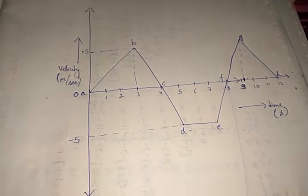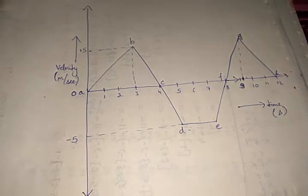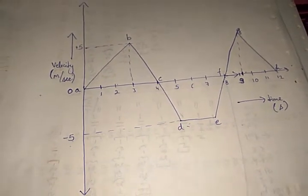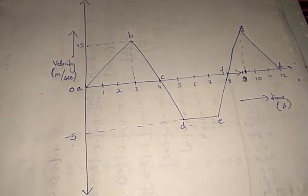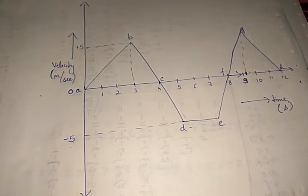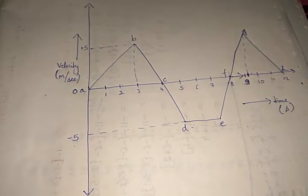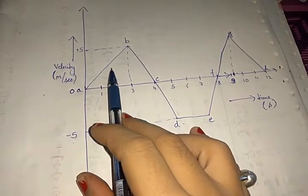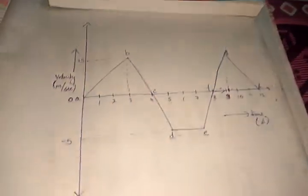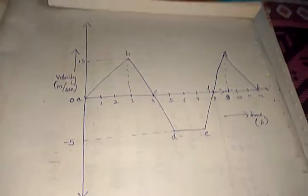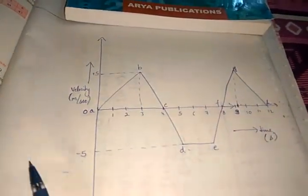Now the question arises: why do we plot a velocity-time graph? The use of this graph is to find the displacement of the body. From a displacement-time graph we can find velocity and total distance, but from a velocity-time graph we can find the displacement — that is, the shortest distance traveled by the body.